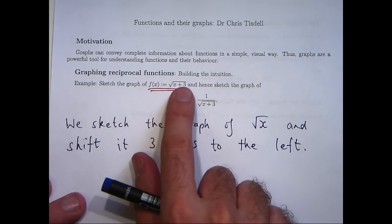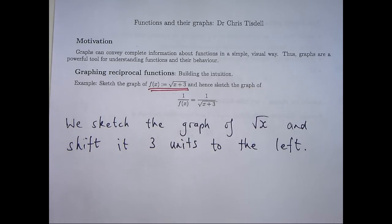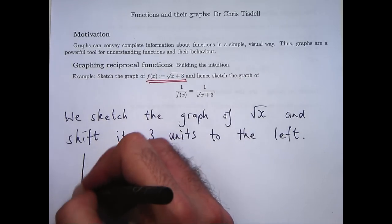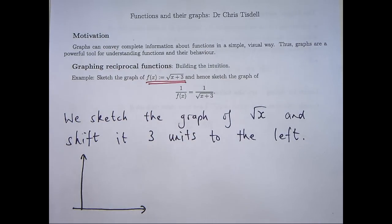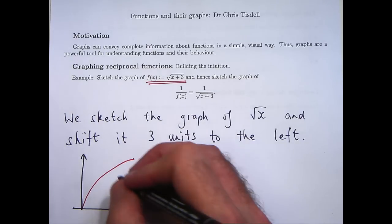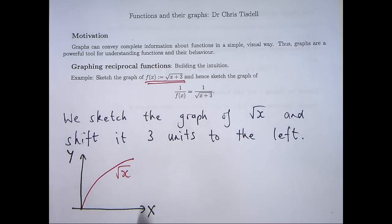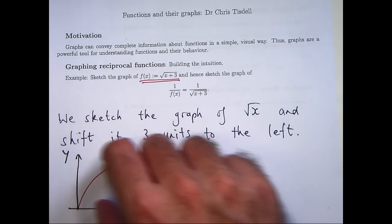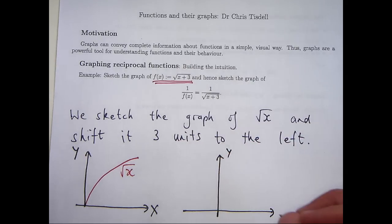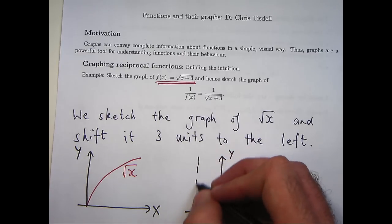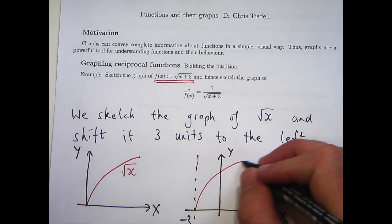If this was an x minus 3 here, we would sketch the graph of this function and shift the graph 3 units to the right. So we should be able to easily sketch the graph of the square root of x — it looks something like this. We're going to take this graph and shift it 3 units to the left, so the shifted graph will look something like this.